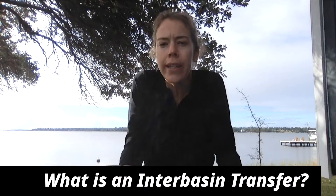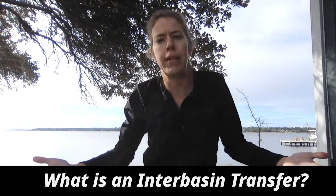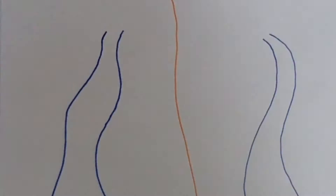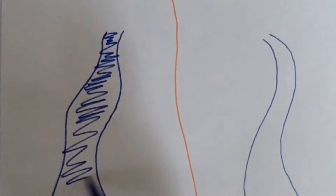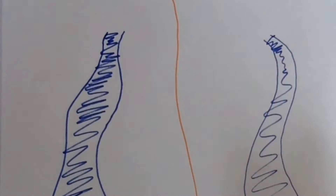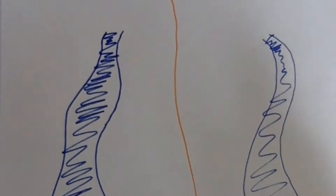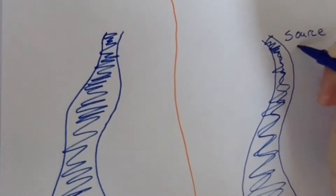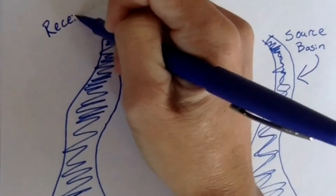Then I decided to ask them, simply put, what is an interbasin transfer? Simply put, an interbasin transfer is the withdrawal of water from a source basin surface water source and the movement of that water to a receiving basin surface water.